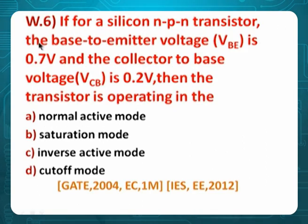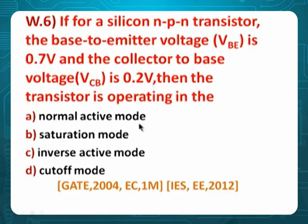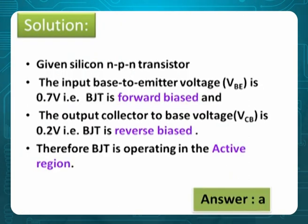Problem 6: For a silicon NPN transistor, VBE = 0.7 and VCB = 0.2. What region is the transistor in? VCB = 0.2 is greater than zero — positive. Positive given to N is reverse bias. When the output junction is reverse biased, it is active mode. So the answer is A, active region.